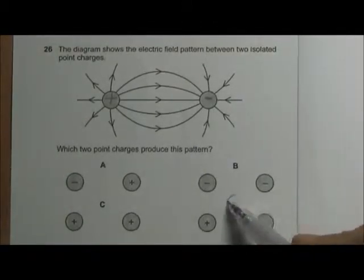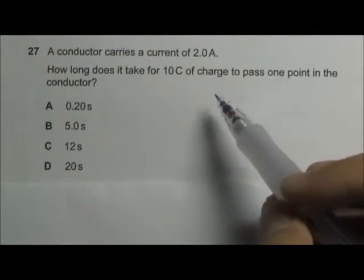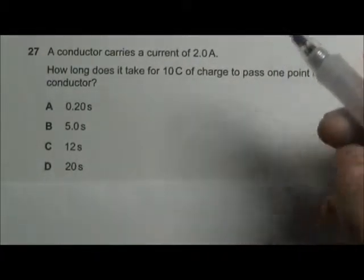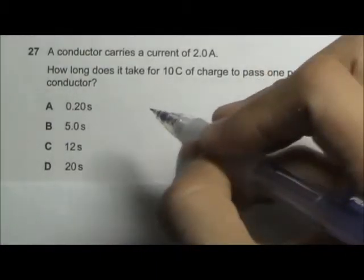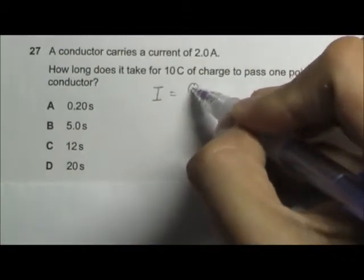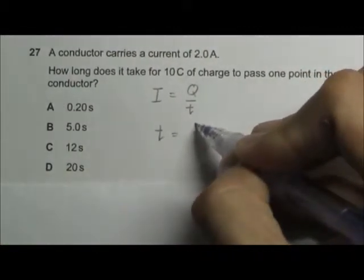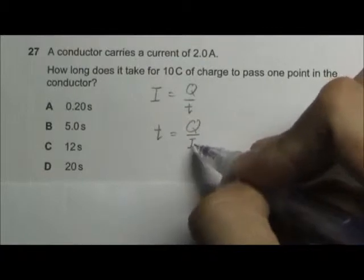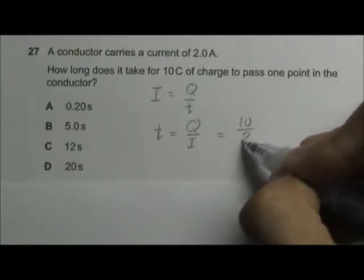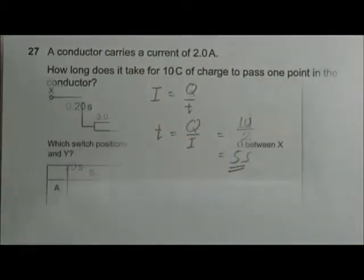So the answer should be D. We have a conductor that carries a current of 2A, and how long will it take for 10C of charge to pass through one point in the conductor? This is a very straightforward question. We use the formula I equals Q over T. So T equals charge divided by current. This will be 10 divided by 2, five seconds. Answer B.